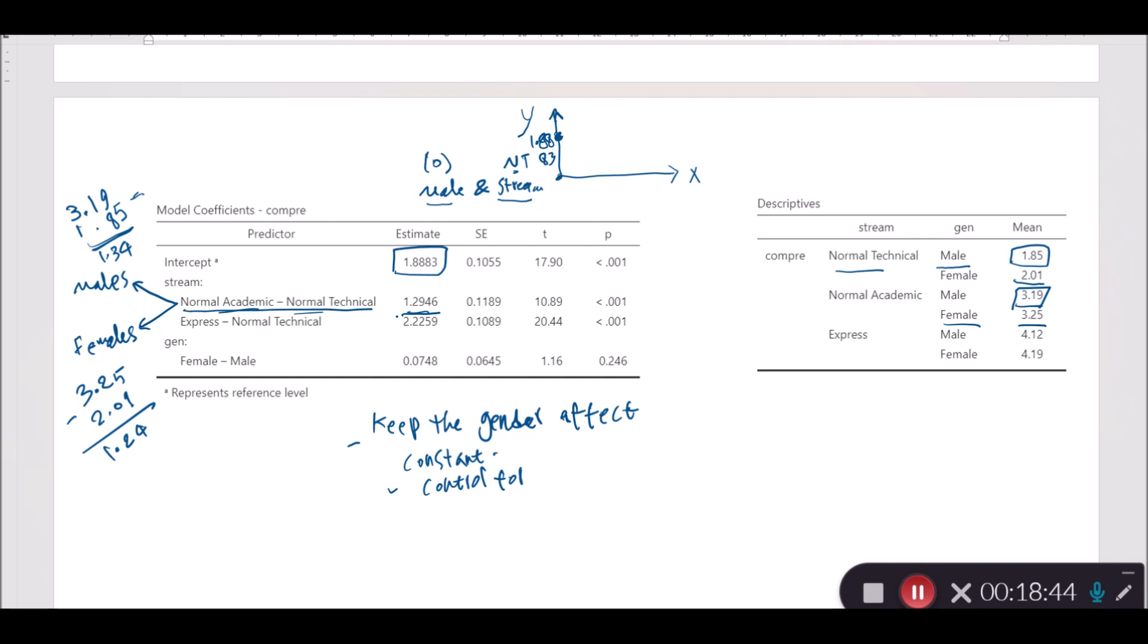We're going to get the average of these two statistics. So it's going to be 1.34 plus 1.24, divided by 2, which gives us roughly 1.29. So 1.29 is right here, 1.2946. It has two additional decimal values there, which is because the two analyses in Jamovi are using different decimal values. So let me just draw this once again. That's how this one is calculated for express and normal technical. You can go through the same process.